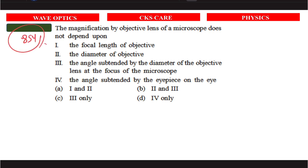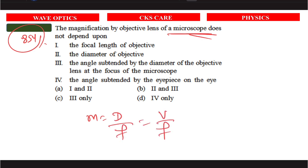Question 844: the magnification by objective lens of a microscope does not depend on what? The magnification depends on D/F and the angle subtended by the eyepiece on the eye. If the angle is kept the same, magnification depends on the angle. The answer is option D — it does not depend on the diameter of the objective lens.